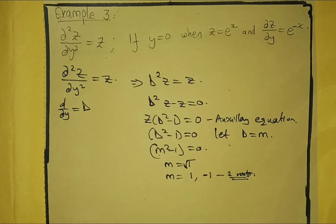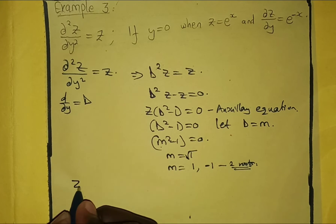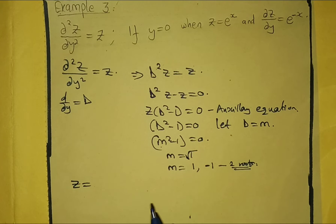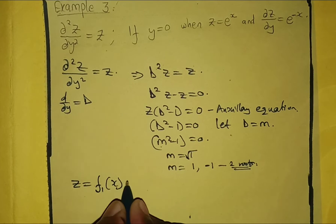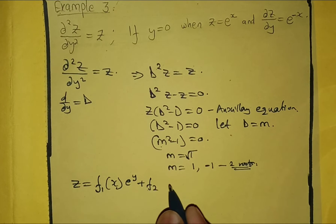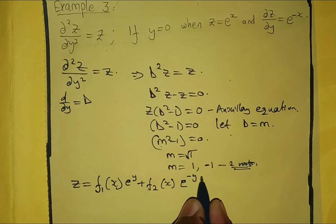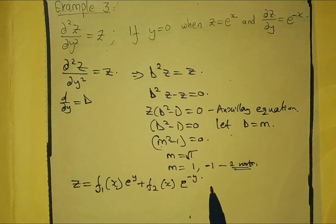Since this is a partial differential equation, our general solution will be z = f₁(x)e^y + f₂(x)e^(−y), where e^y corresponds to the first root of 1 and e^(−y) corresponds to the second root of −1.